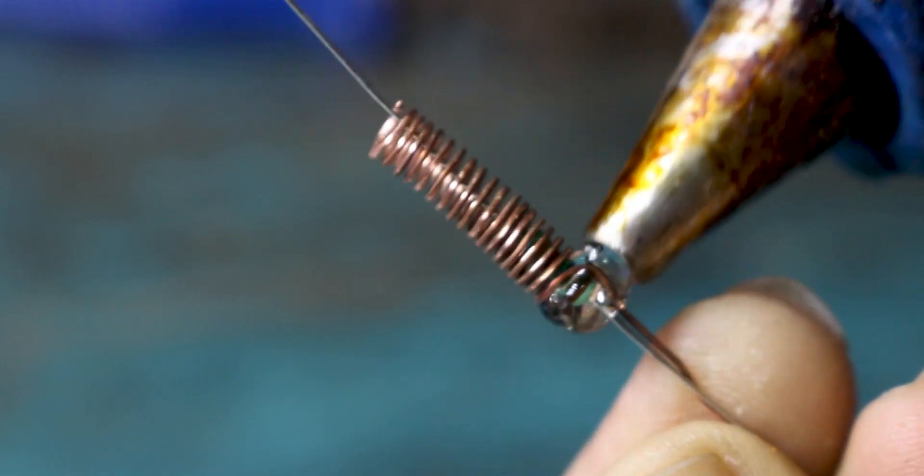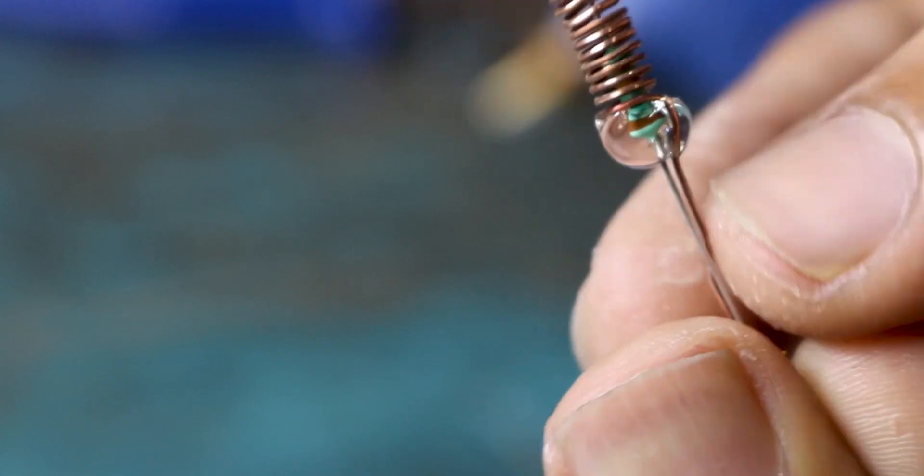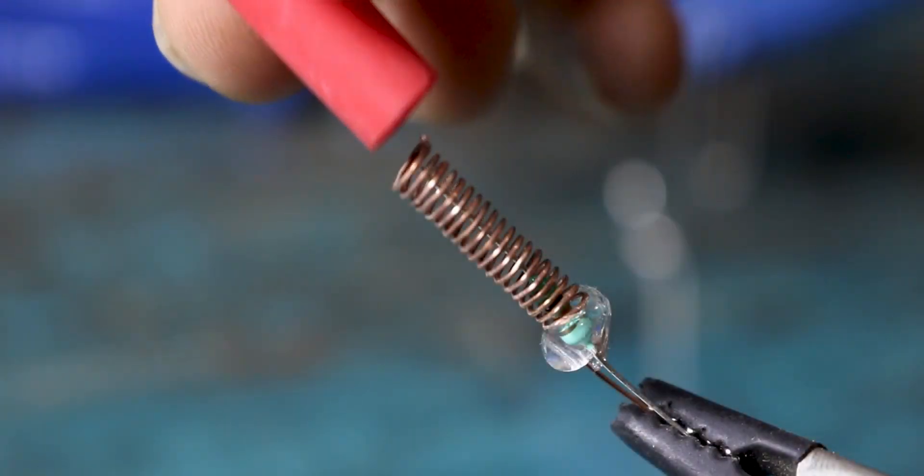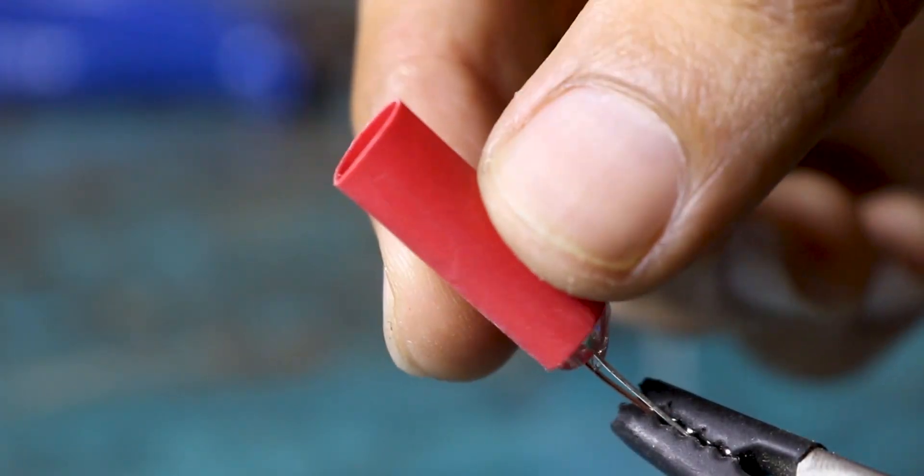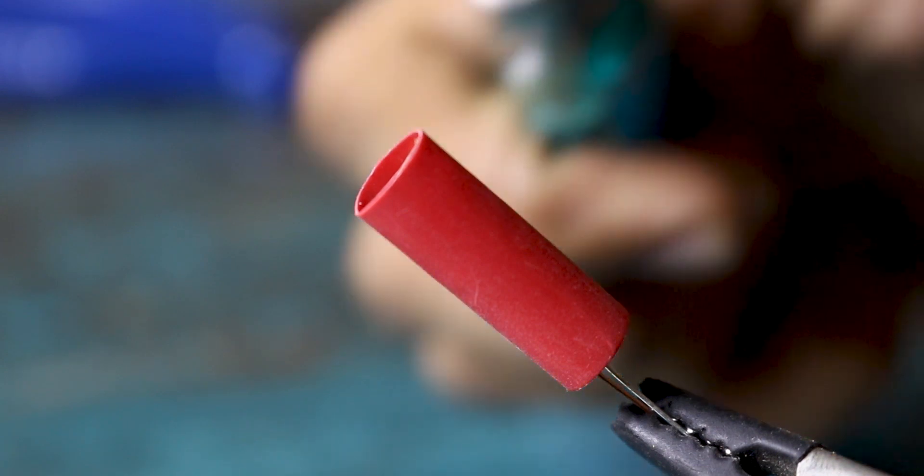After that you can fix it in place using some hot glue or two component adhesive. Now that is done, use some heat shrinking tube and cover the sensor. And you are done.